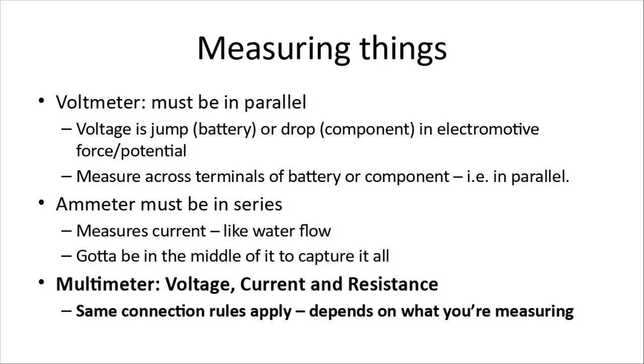To measure current, we have to be in the middle of it. So you have to open up the circuit and put your ammeter in the middle of it. It's like water flow. If you want to measure it, you have to put a wheel in the middle of it to catch it all. Now, a multimeter is one device that combines the ability to measure voltage, current, and resistance. But the same connection rules apply depending on what you're measuring. If you're measuring voltage, you've got to go parallel across. If you're measuring current, you have to go in the circuit and measure.